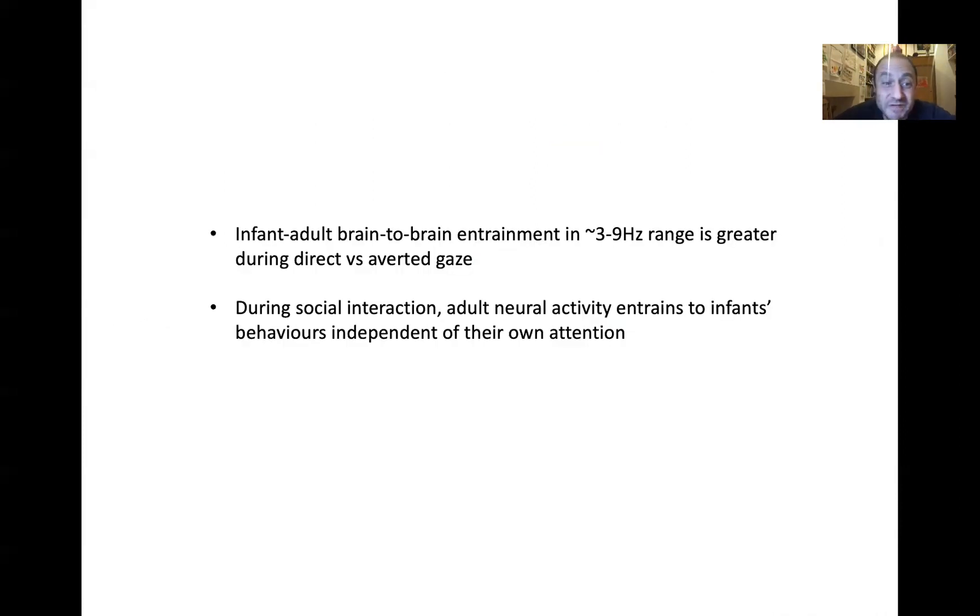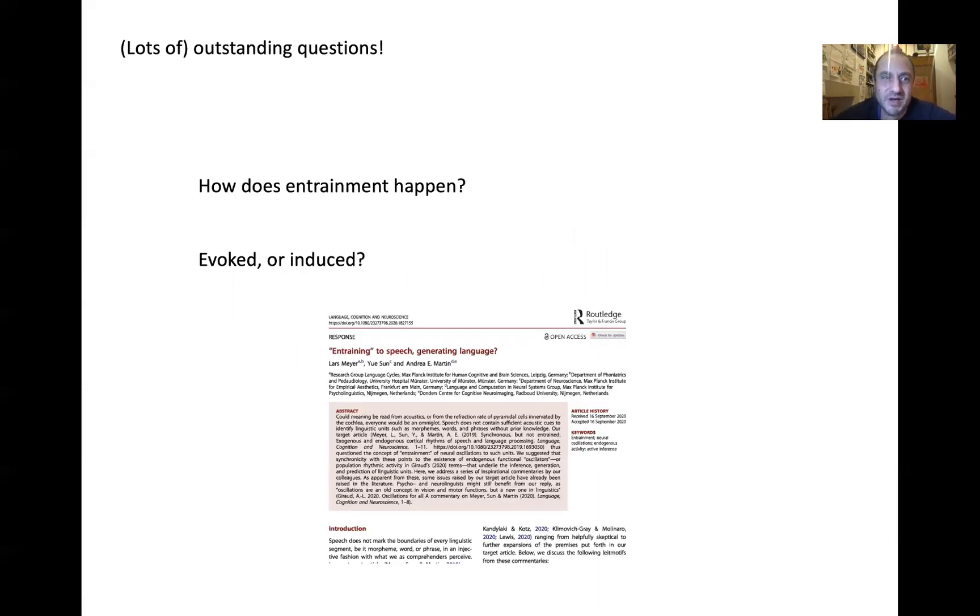So that's what I'm going to tell you for now. Infant adult brain-to-brain entrainment in the three to nine hertz range is greater during direct versus averted gaze. That was the first paper. And then the second paper was during social interaction, adult neural activity entrains to infant behaviors independent of their own attention.